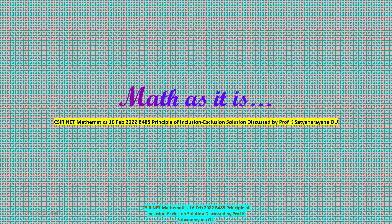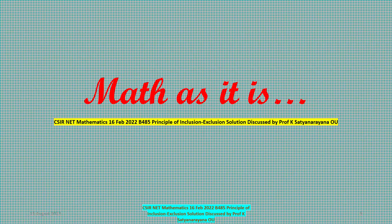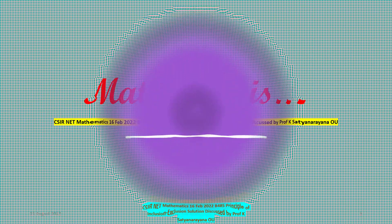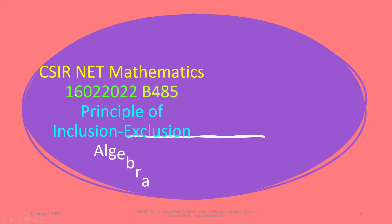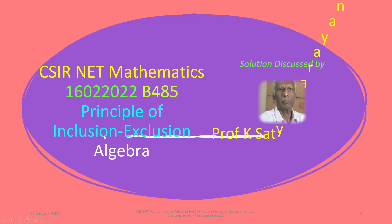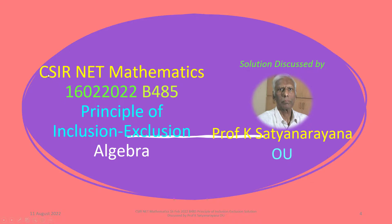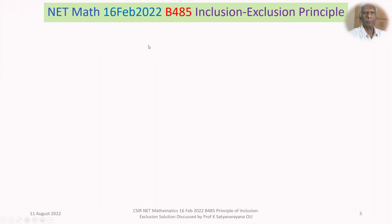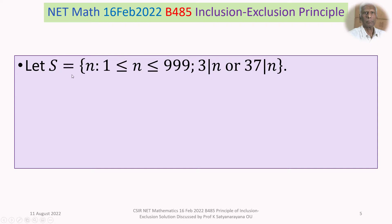We will now discuss the solution of a problem from the section Algebra. The problem is based on the principle of inclusion and exclusion, and this question appeared in the CSIR National Eligibility Test held on 16th February 2022. It is from Section B.